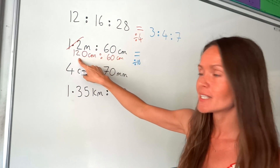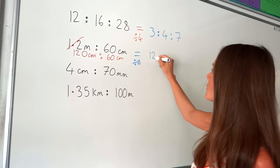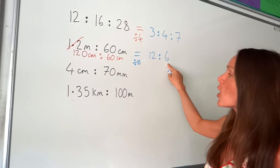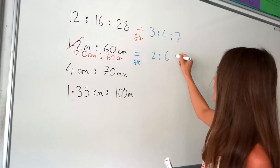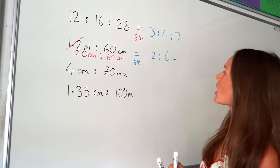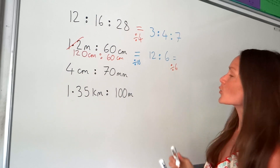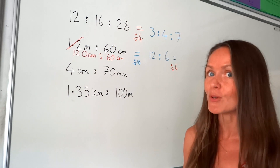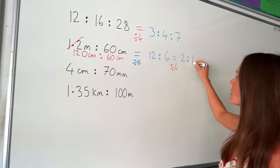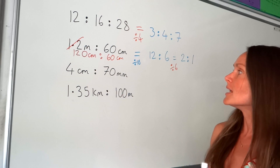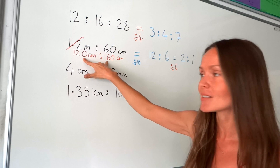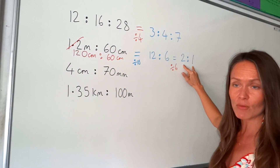120 divided by 10 is 12, and 60 divided by 10 is 6. So here's an example of when we need to simplify again. This time the highest common factor is 6, so divide both by 6. 12 divided by 6 is 2, and 6 divided by 6 is 1. If you had spotted that 60 was the highest common factor and divided by 60, it would take you straight to the simplified answer.